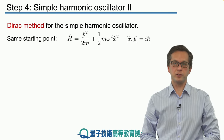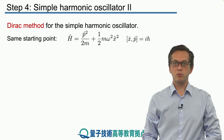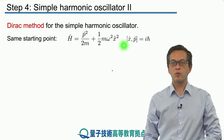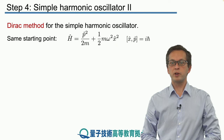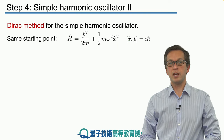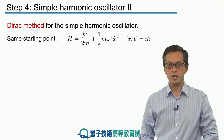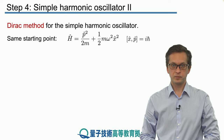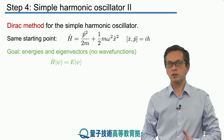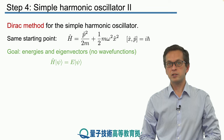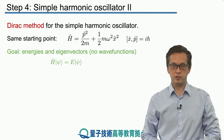So the starting point is the same. We've got our Hamiltonian for the simple harmonic oscillator given by the following expression, where our operators for position x and momentum p satisfy the commutation relation where the commutator is equal to ih bar. And our goal is the same as well — we would like to know the energies and the eigenvectors of the Hamiltonian.